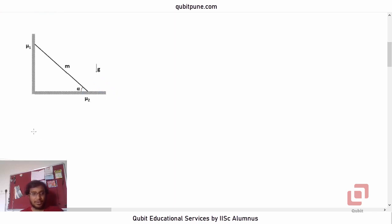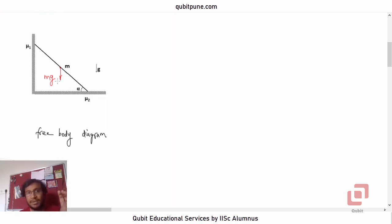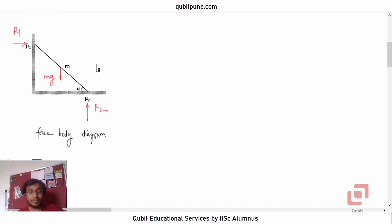Let us draw the free body diagram and show all the forces acting on the body in red. Weight mg will be acting downwards. Wherever there is physical contact between two surfaces or two bodies there will be normal reactions. So we have a normal reaction R2 from the floor and a normal reaction R1 from the wall.